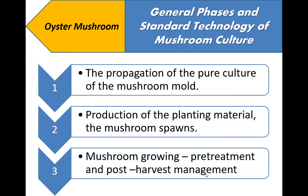These are the general phases and standard technology of mushroom culture. The first stage is the propagation of the pure culture of the mushroom mold. Second is the production of the planting material, the mushroom sponge, and the mushroom growing, which are composed of pre-treatment and post-harvest management.